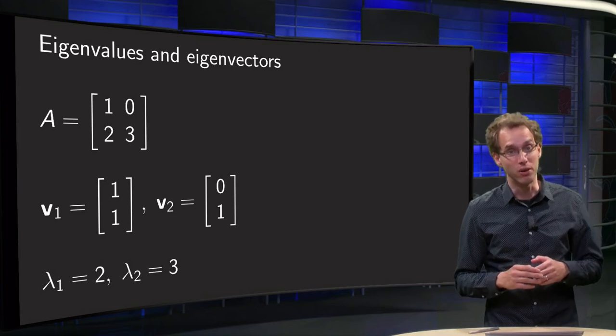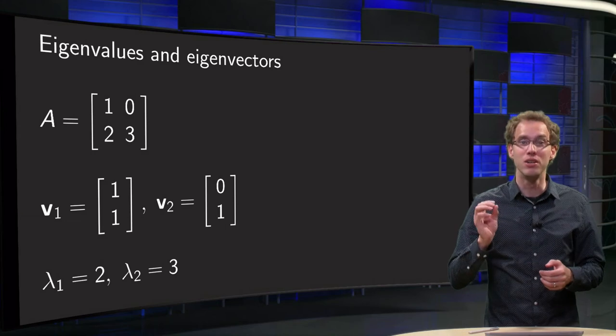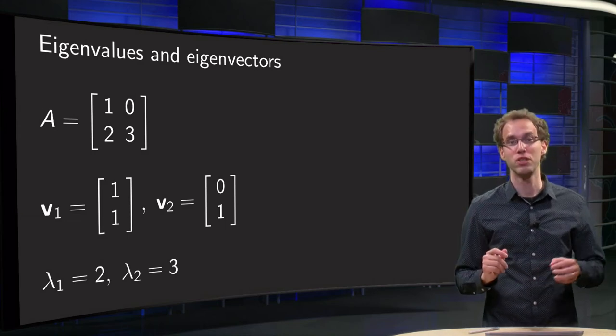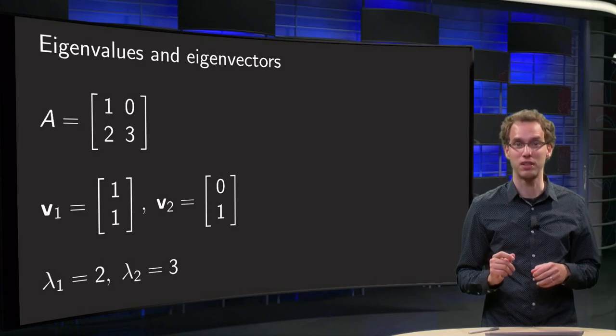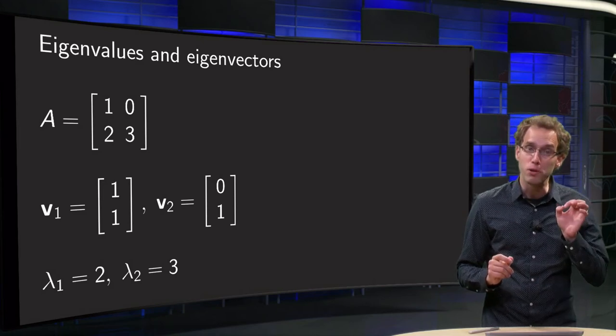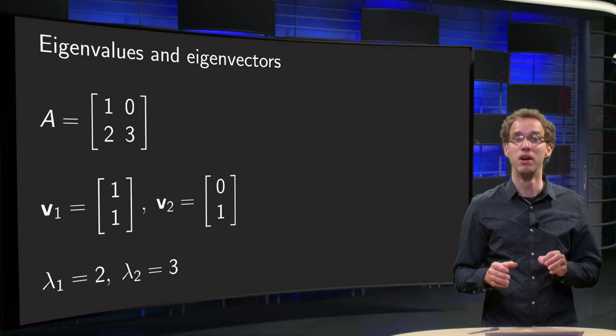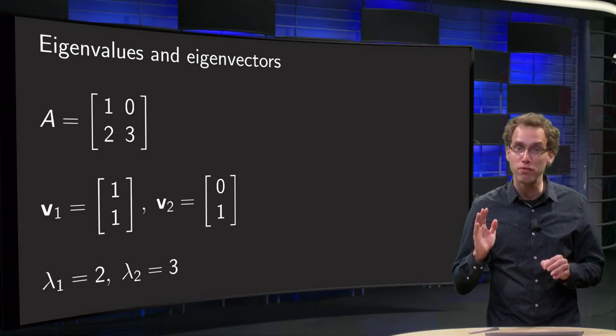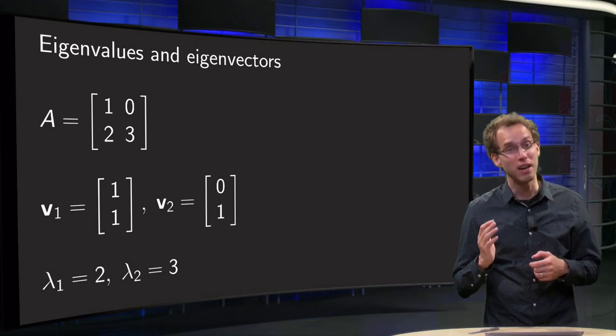Unfortunately, as we will see later on, you need to solve the problem the other way around. Given some matrix, you determine the eigenvalues first, and given the eigenvalues, you will find the corresponding eigenvectors. We will postpone the problem of finding the eigenvalues to a later video, and we will look at the second part first.